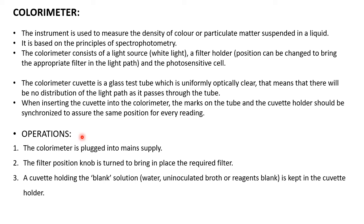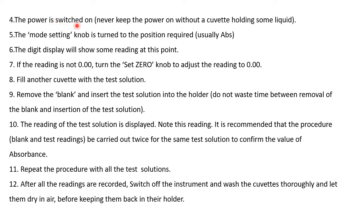To operate the colorimeter: plug it into the main supply and turn the filter position knob to bring the required filter into place. Place a cuvette holding the blank solution — which can be water, uninoculated broth, or a reagent blank depending on your experiment — into the cuvette holder. Switch on the main supply. Never keep power on without a cuvette holding liquid, as it can damage the equipment or cause reading errors. Turn the mode setting knob to the required position, usually absorbance.